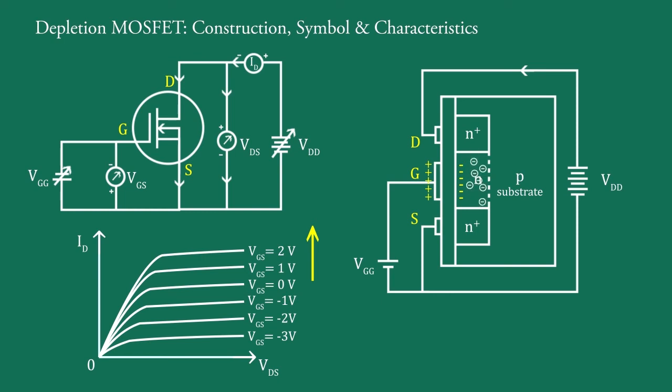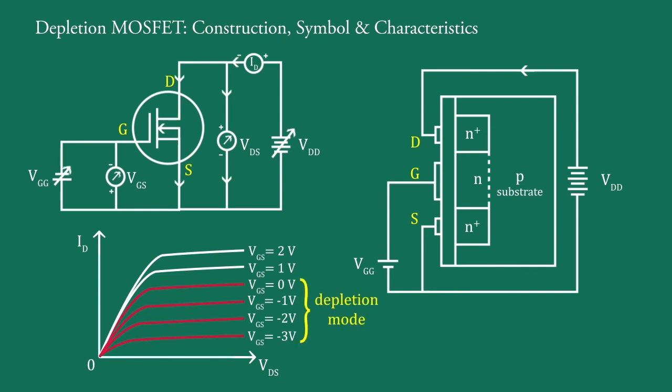These are the characteristics of the device when it is in depletion mode, and these are the characteristics of the device when it is in enhancement mode. Thus, this device can be operated in depletion and enhancement modes also, although it is termed a depletion type to differentiate it from the second MOSFET type that can be worked in the enhancement mode.